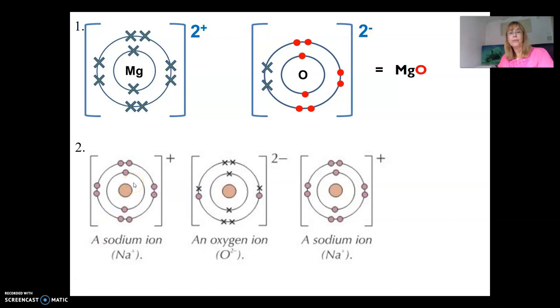This one's interesting. Sodium is in group 1, forming a 1+ charge, but oxygen needs two electrons, not one. So I bring a second sodium ion into this. That's why if I'm joining sodium with oxygen, I need two sodiums for every one oxygen.